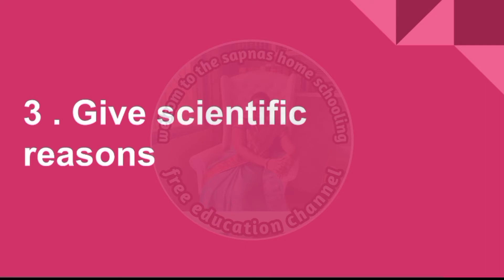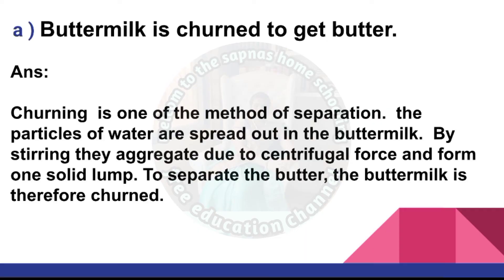Give scientific reason: Buttermilk is churned to get butter. Churning is one of the methods of separation. The particles of water spread out in the buttermilk, and by stirring they aggregate due to centrifugal force and form a solid lump. Therefore buttermilk is churned.